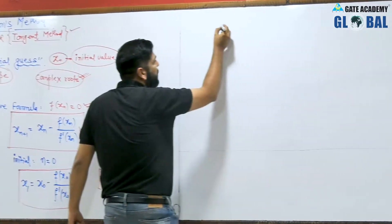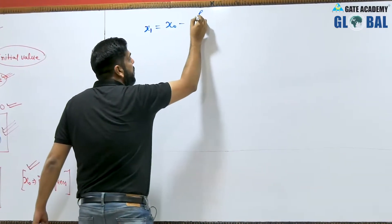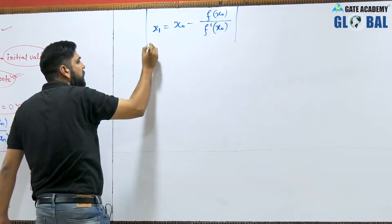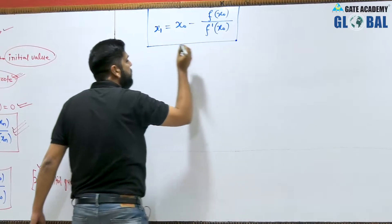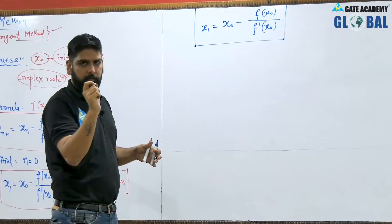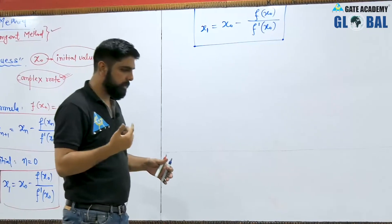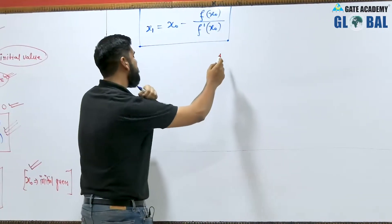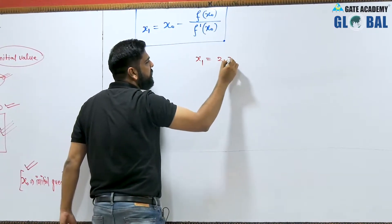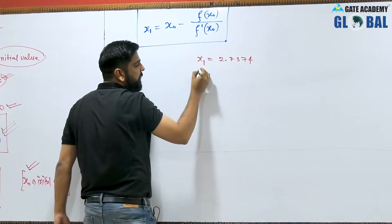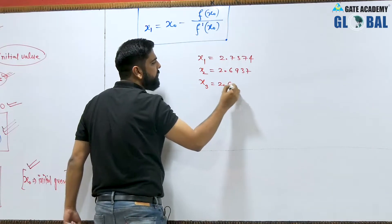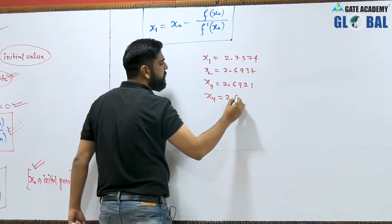The iterative formula gives x_1 = x_0 − f(x_0) / f'(x_0). For example, suppose the iterations give: x_1 = 2.7374, x_2 = 2.6937, x_3 = 2.6921, and x_4 = 2.6921.